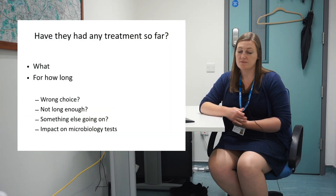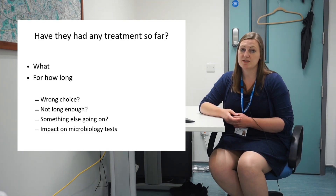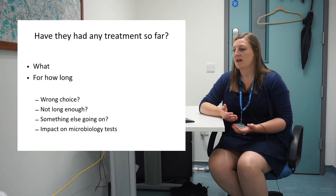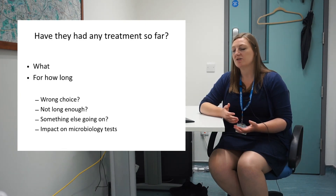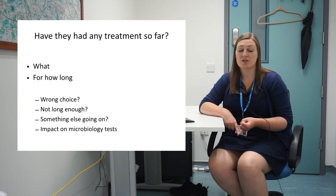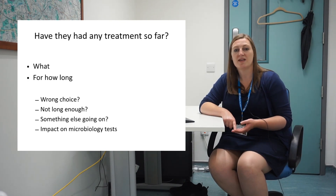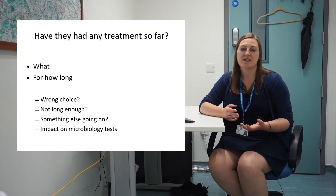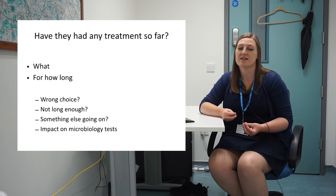The second question is: have they had any treatment so far? You want to know what they have had - with electronic records it's easier to know if they've had prescriptions from urgent care centres or GPs. Then for how long? Have they actually taken the antibiotic? Have they taken just 24 hours of it, or already five days or three courses over the past six weeks? This information helps you decide whether the treatment they've had was the wrong choice - covering the wrong organism, wrong source, or perhaps there's resistance - or whether they've simply not had long enough.